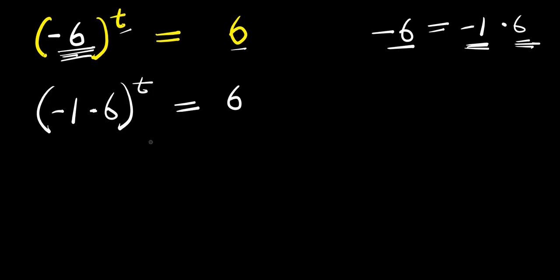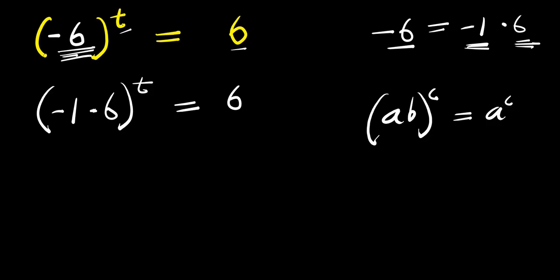The next thing we are going to do is consider this identity: if you have (a times b) raised to the power of c, this equals a^c times b^c. So we distribute this exponent to each of the terms inside the bracket, giving us negative 1 to the power of t times 6 to the power of t, and this equals 6.